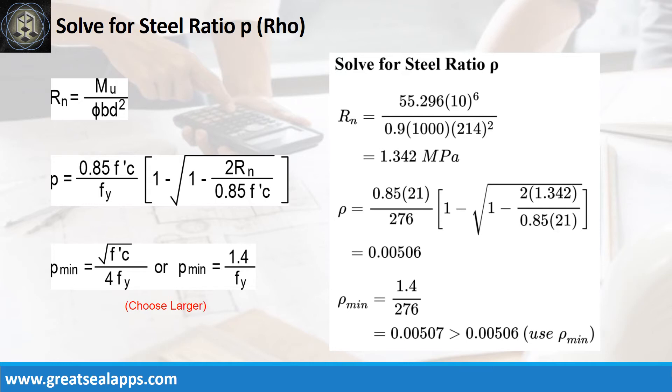B equals 1000 millimeters and D equals 214 millimeters. The beam design ratio RN equals 1.342 MPa and reinforcement ratio ρ equals 0.00506. Use ρ minimum of 0.00507.